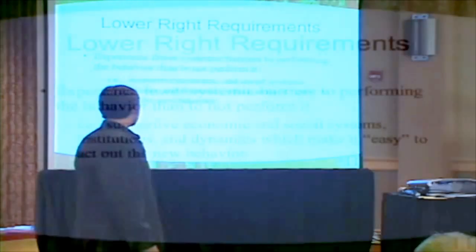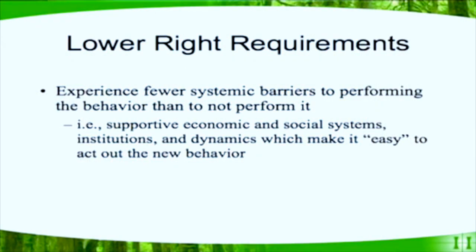Some lower right requirements. There needs to be the systems in place to make it easy. And that can range from economic, to social, to political systems, dynamics that make it easy to act out the new behavior. If there's not recycling bins in the back of the room, it's hard to take care of the compost.